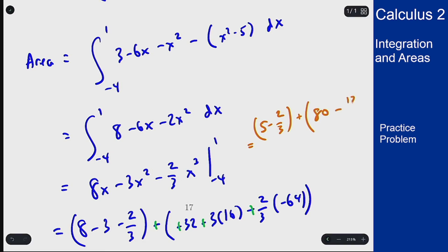Since 5 is 15 thirds and 80 is 240 over 3, this becomes 13 thirds plus 240 minus 128 is 112 over 3, which is 125 over 3.